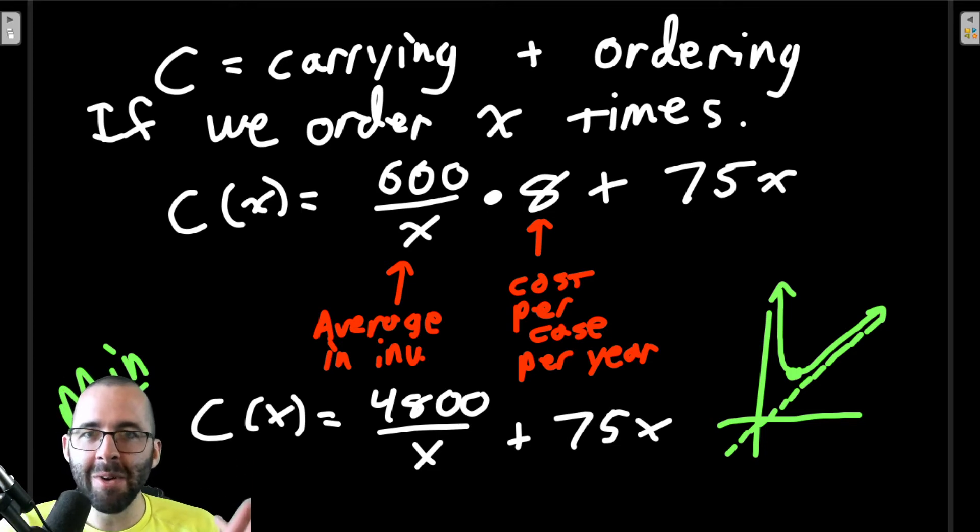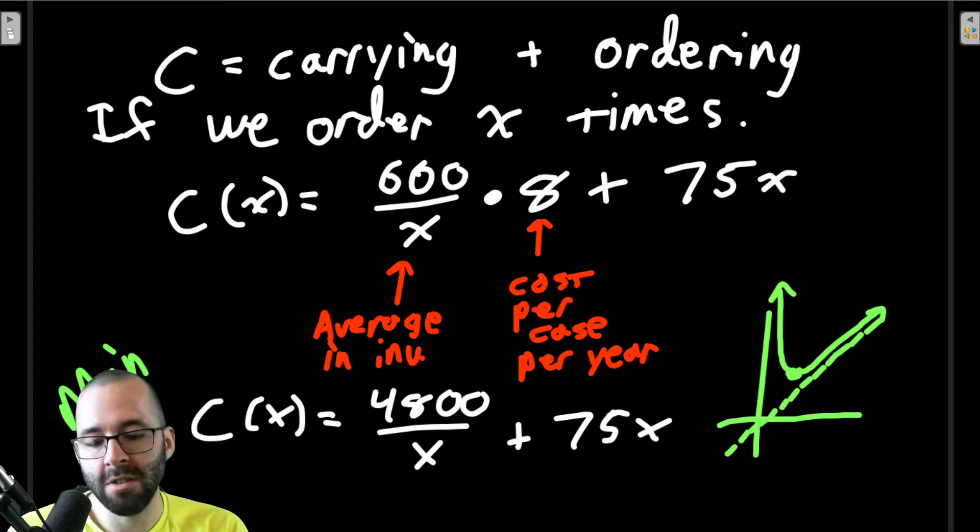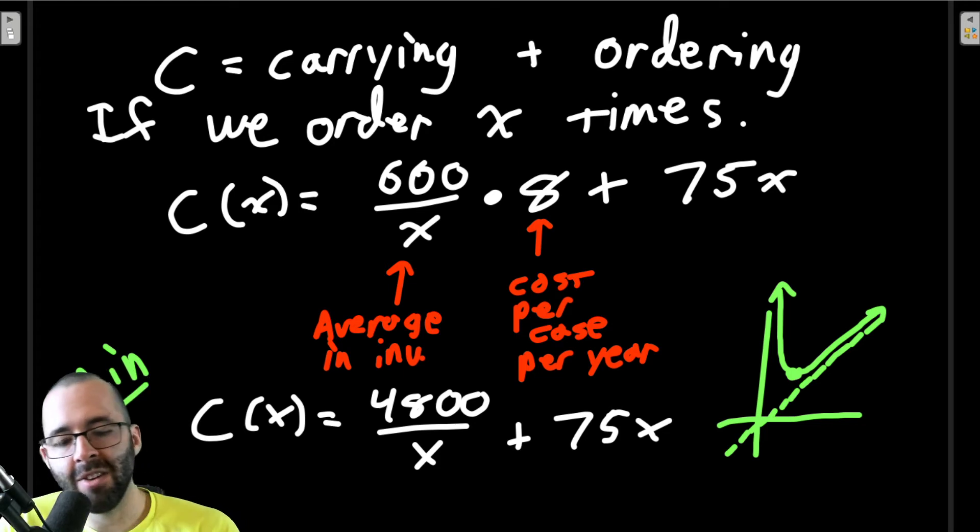So how do we minimize something? We find this local minimum. How do we find a local minimum? We look at critical points when the derivative equals zero. We use the first or second derivative test to make sure it's a minimum.